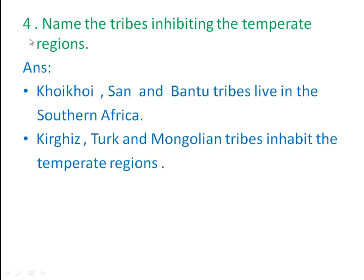Fourth question: name the tribes inhabiting the temperate regions. Koi Koi, San, and Bantu tribes live in southern Africa. Kirghese, Turk, and Mongolian tribes inhabit the temperate regions.